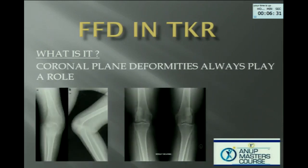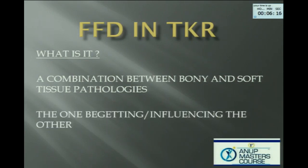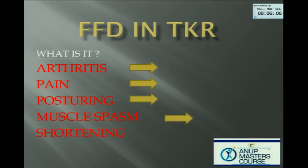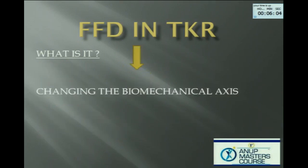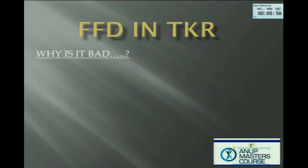Coronal plane deformities always play a role. There is a combination between bony and soft tissue pathologies. As the previous speaker said, be prepared to do both — cut right, balance right. The patient has arthritis; for whatever reason it is painful. The patient starts posturing, gets muscle spasms, shortening of the posterior structures, and changing of the biomechanical axis — accelerating not only the afflicted leg but also the pathological process in the contralateral leg.